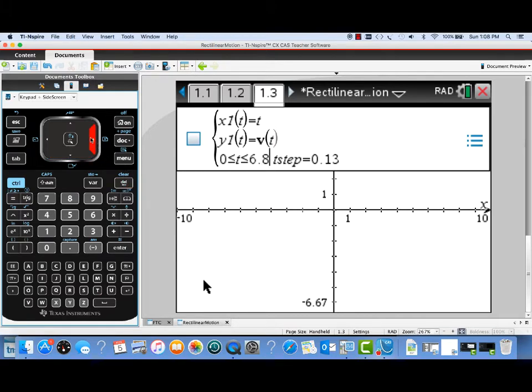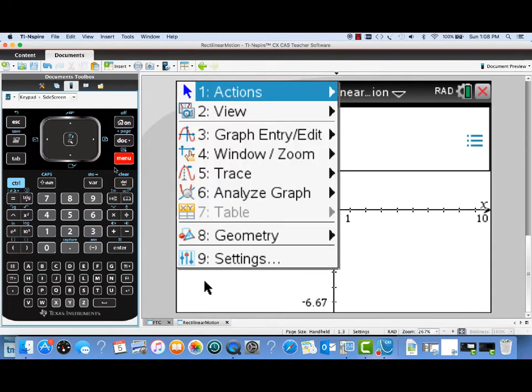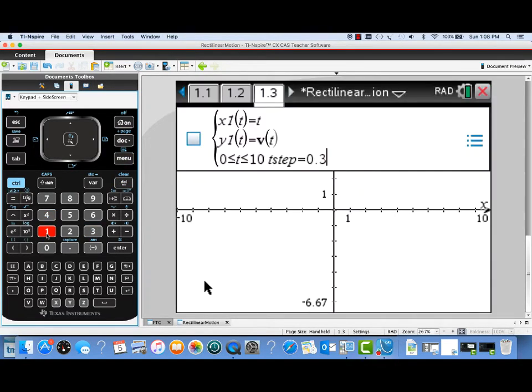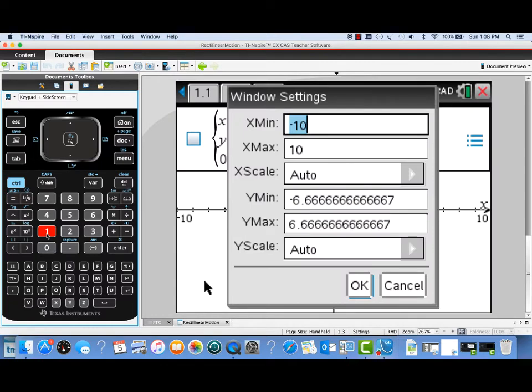I'll change the time interval to 0 less than or equal to t less than or equal to 10. And our increment for time, I'm going to change it to match up with the trace step size, which is going to be 0.3. So I'll just edit t-step to be 0.3. And let's also change the window to be more appropriate. We'll give ourselves a little bit of room on both sides.